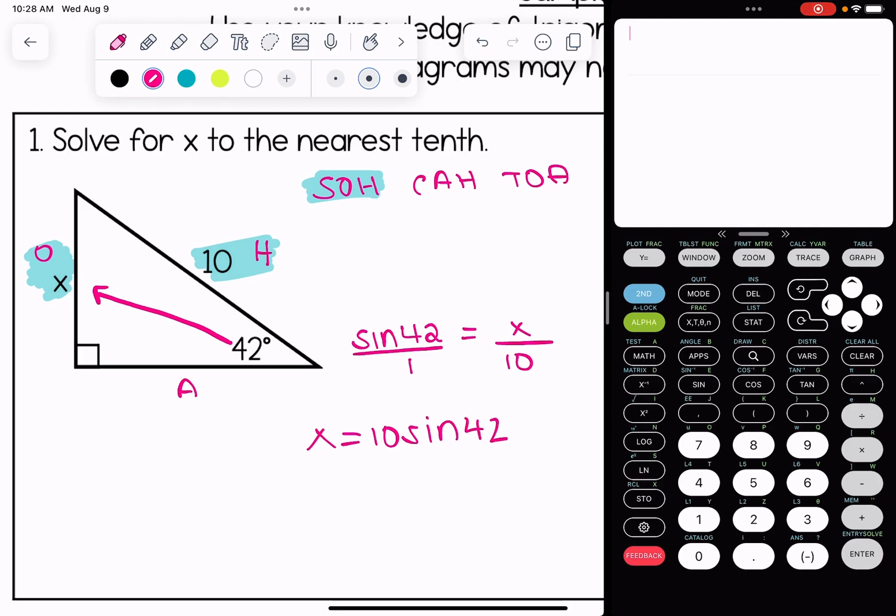I get x equals 10 sine 42. We always want to make sure sine 42 stays together. Don't flip flop the 10 and the 42. Then we just type this in our calculator: 10 times sine 42. We're rounding to the nearest tenth, and I get that x is 6.7.